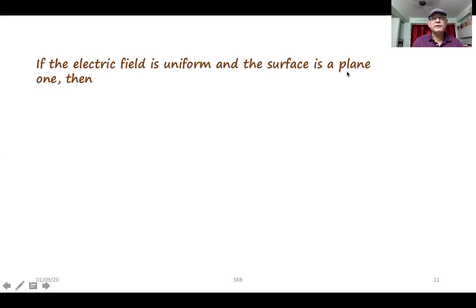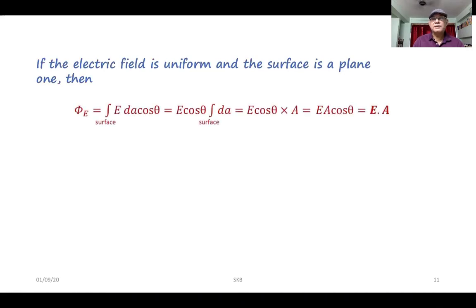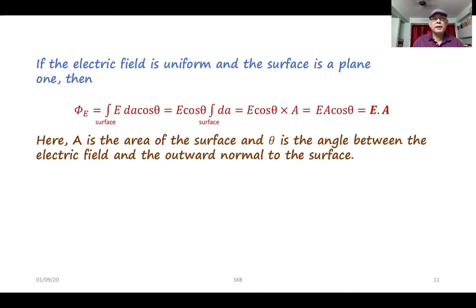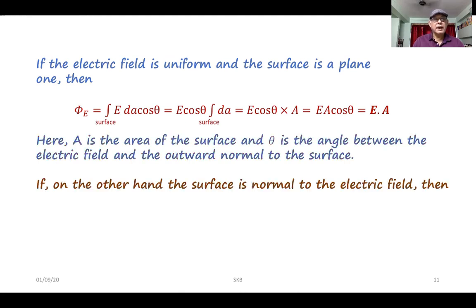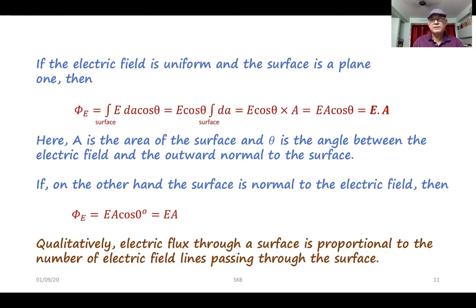If the electric field is uniform and the surface is a plane one, then the electric flux is equal to E A cos theta — the product of the magnitudes E and A. Here A is the area of the surface and theta is the angle between the electric field and the outward normal to the surface. If the surface is normal to the electric field, then the flux is E A cos 0 equals EA. Qualitatively, electric flux through a surface is proportional to the number of electric field lines passing through the surface.